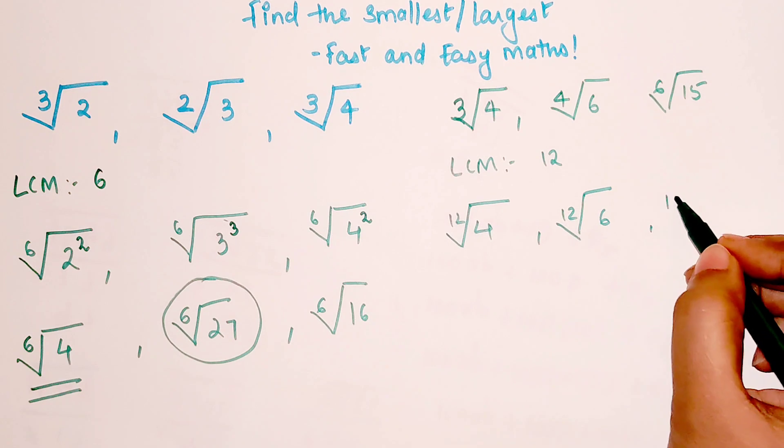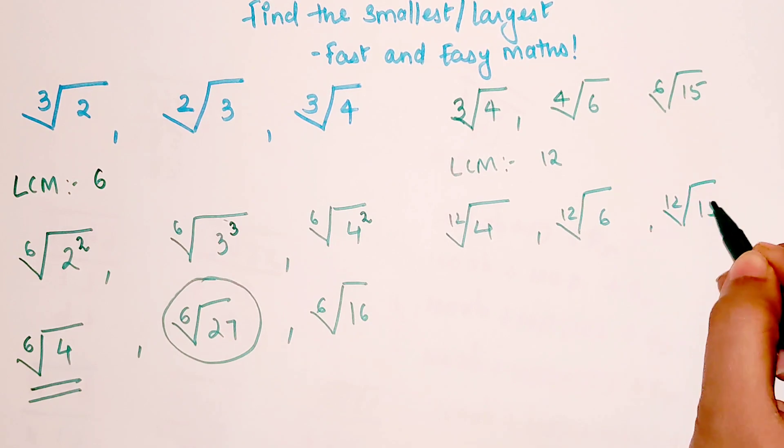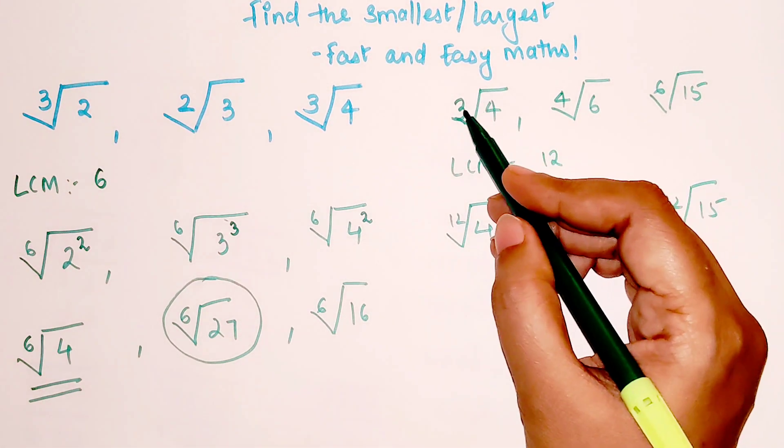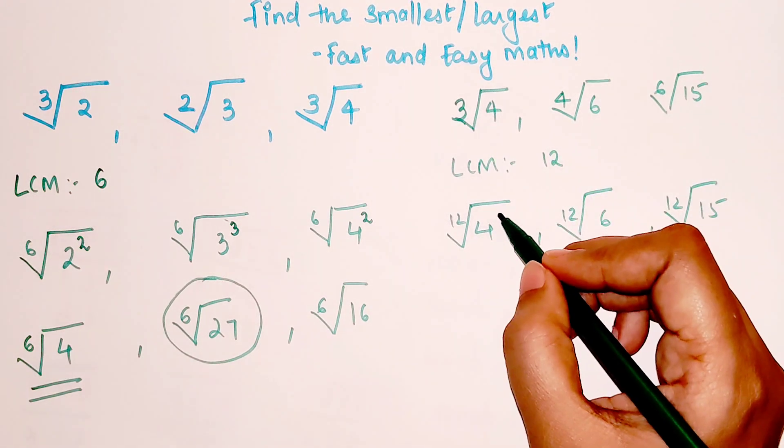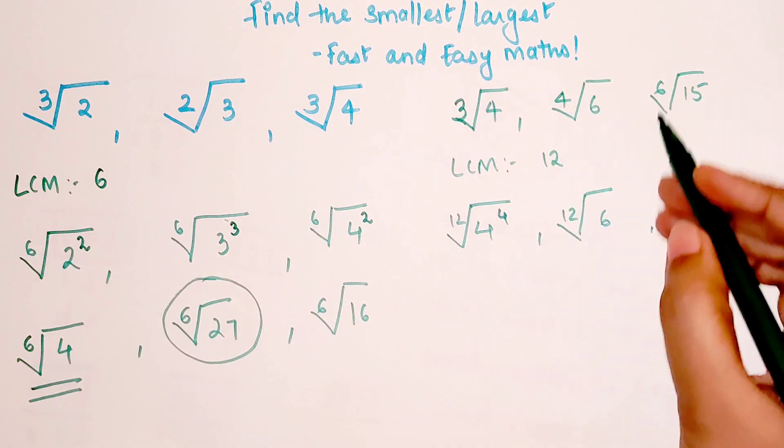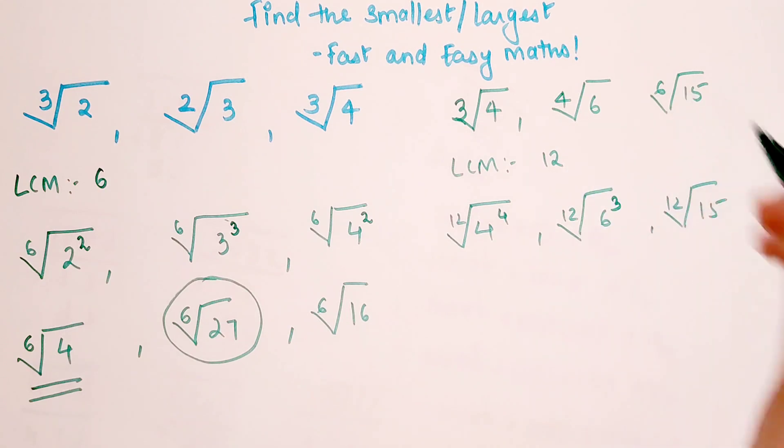Here all of these will be written with the 12th root. Dividing 12 by 3 you get 4, 12 by 4 you get 3, and 12 by 2 you get 2.